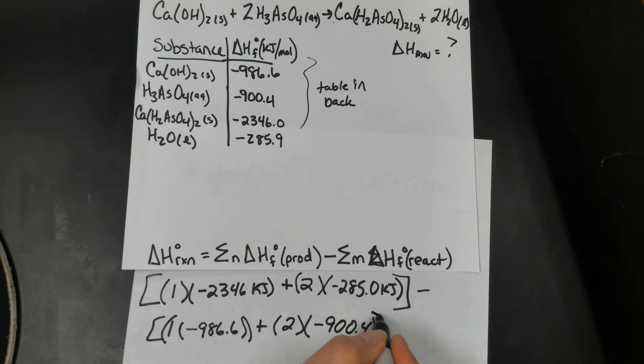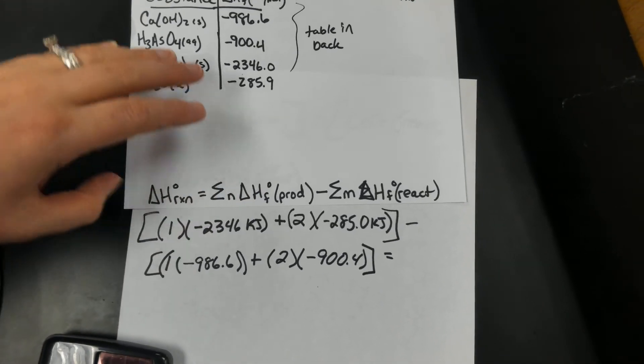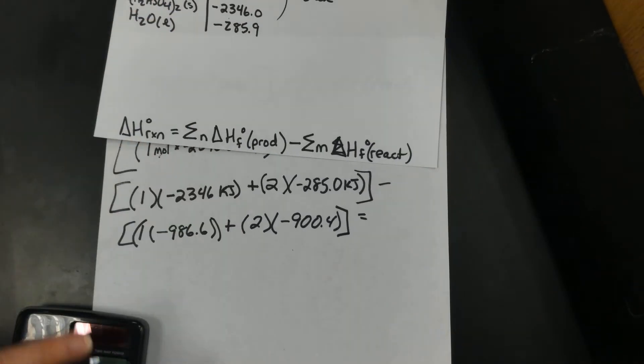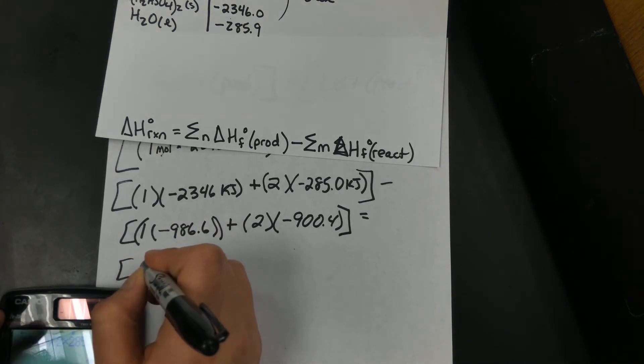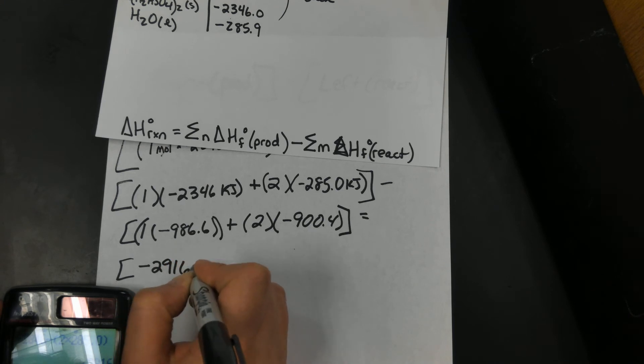Now you notice I kind of stopped writing the kilojoules here, because they're all going to be in kilojoules. I know my answer is going to be in kilojoules. So I do find it easier if you just do it kind of piecemeal, so that I don't get confused and mixed up. So I'm going to try to take care of my products first, and then my reactants. So negative 2346, and then it's going to be minus whatever 2 times 285.0 is. So the right side is negative 2916 kilojoules.